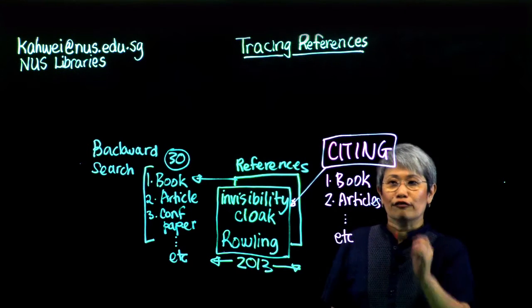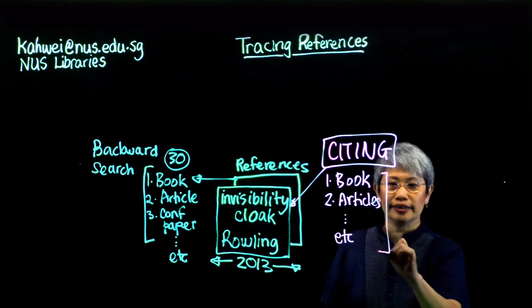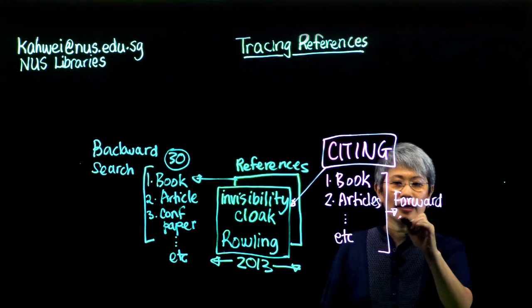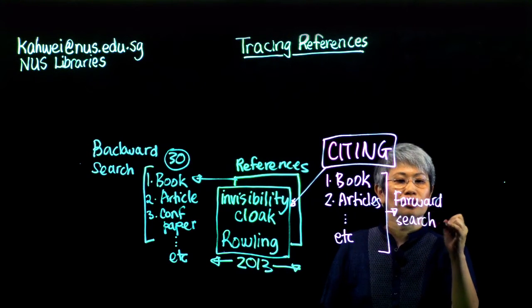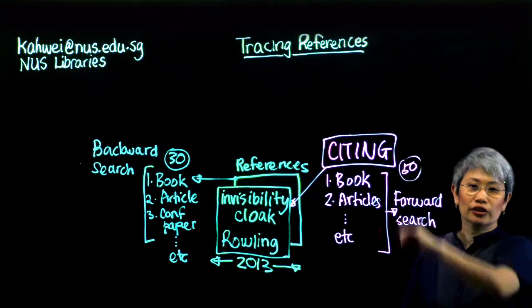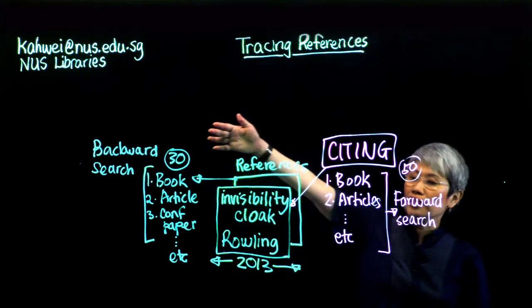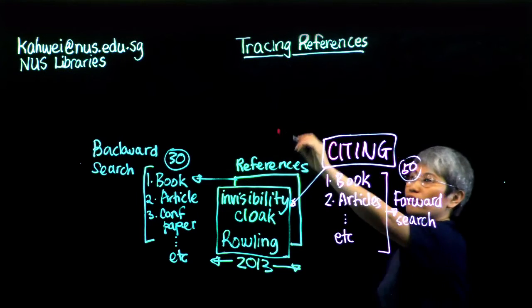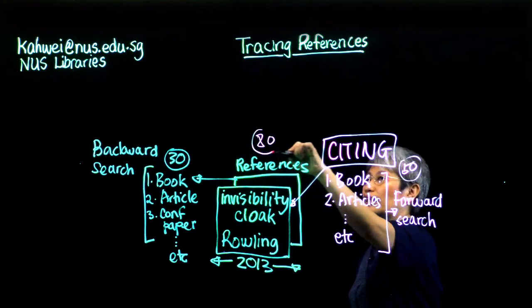Let's just say if you trace every single one of these, you would be doing a forward search. And your forward search may possibly yield about 50 publications. So if you were to trace 30 publications here, 50 publications here, you would then have a total of 80 publications.